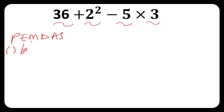Then we have multiplication and division — these move together. Then addition and subtraction — these also move together. So the two operations in each pair are at the same precedence level and are evaluated together.